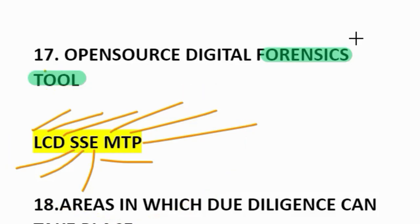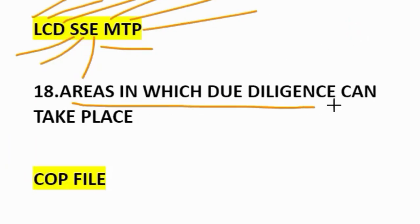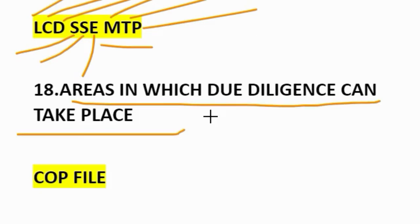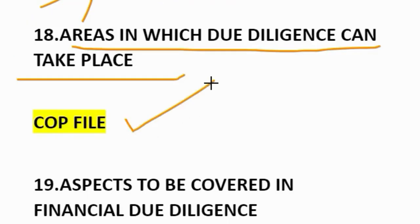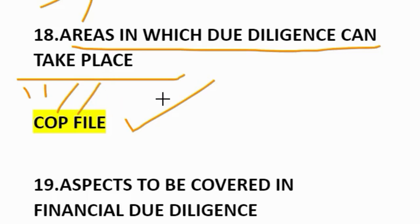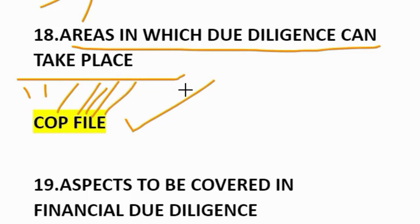Areas in which due diligence can take place. How to remember? COP FILE. CO stands for commercial or operational due diligence. P for personal due diligence. FILE: F for financial due diligence, I for information system due diligence, L for legal due diligence, E for environmental due diligence. COP FILE.